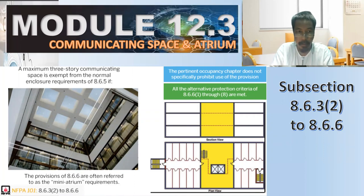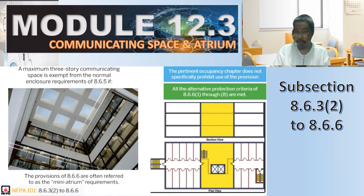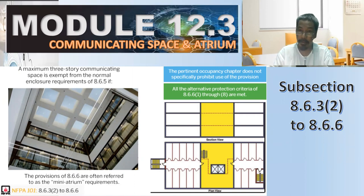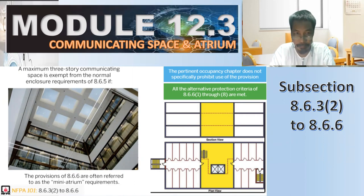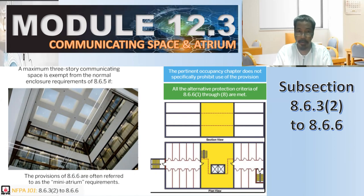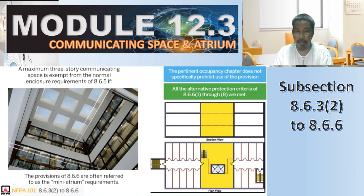The provisions of 8.6.6 are often referred to as mini-atrium requirements. So that's why they are referred to as mini-atrium. The pertinent occupancy chapter does not specifically prohibit use of the provision, and all the alternative protection criteria of 8.6.6, items one through eight, are met.